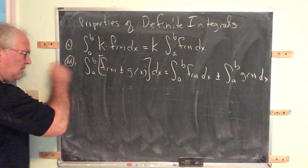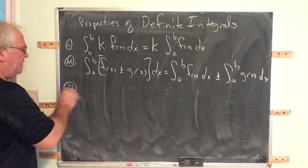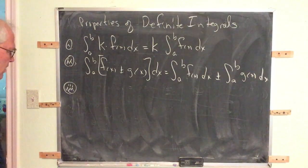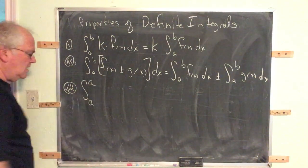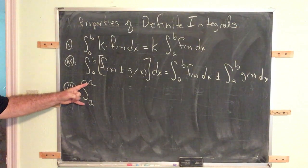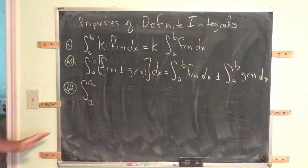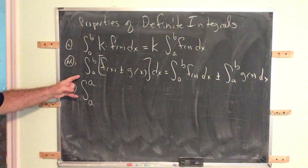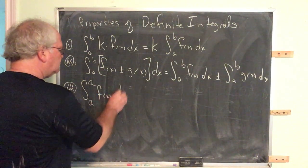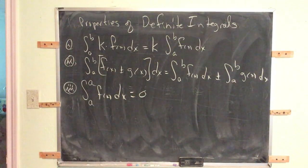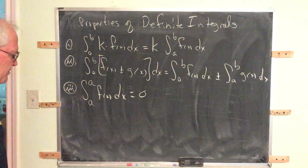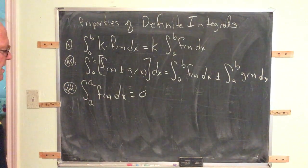There are a couple other properties that come into play. The first is: if the upper and lower limits of integration are the same — it doesn't matter what the number is, as long as it's in the domain of the function — then that integral is equal to zero. This stems exactly from the fundamental theorem of calculus. If the limits of integration are the same, that integral equals zero.